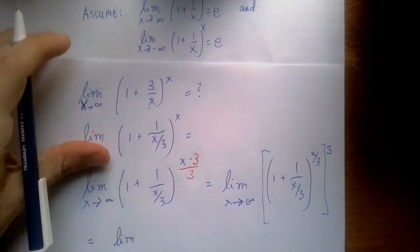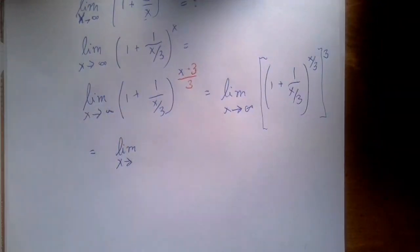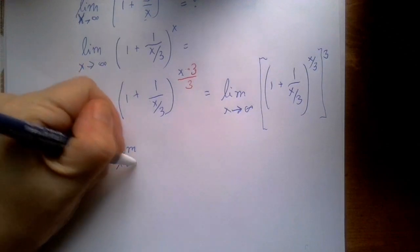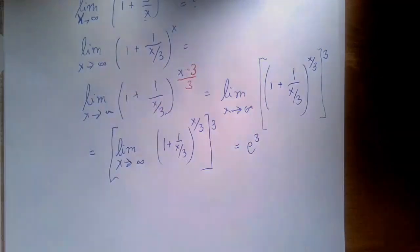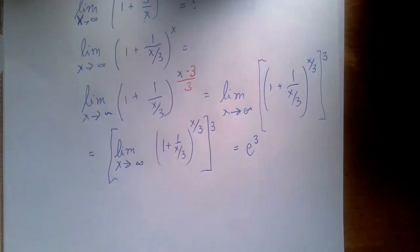And if there is a limit, then by the power rule of limits, this would be the same as the limit as x approaches infinity of 1 plus 1 over x over 3 to the x over 3. And when we're done with this limit, we raise it to the third power, which is e cubed.